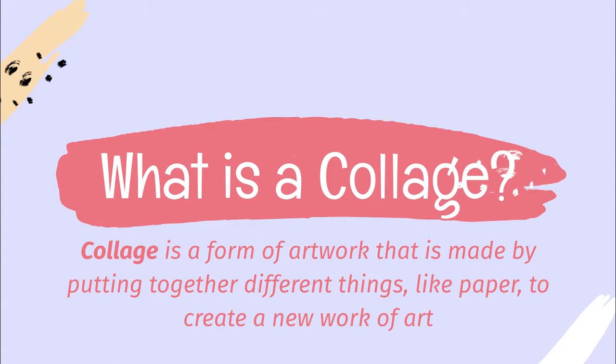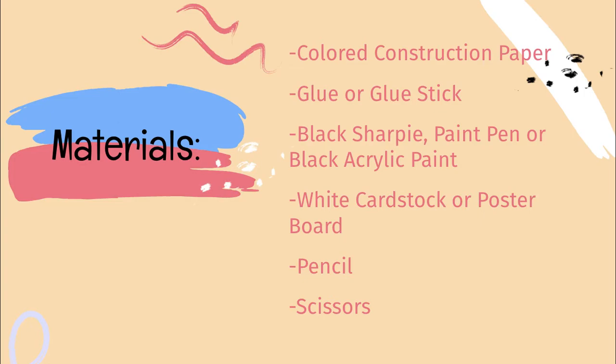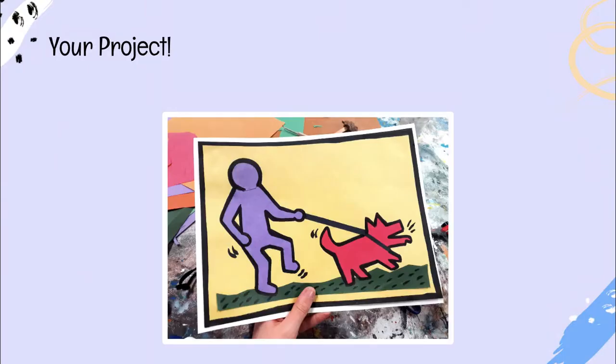A collage is a form of artwork made by putting together different things, like paper, to create a new work of art. You are going to need colored construction paper, glue or a glue stick, a black Sharpie, card stock or poster board, a pencil, and scissors. These are all in your supply bag, but if you can't come to school, these supplies can easily be found at a local dollar store.